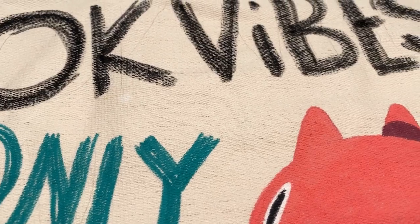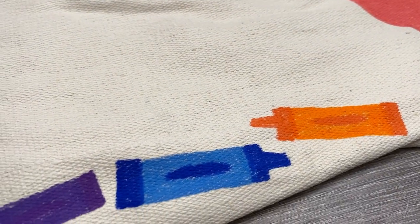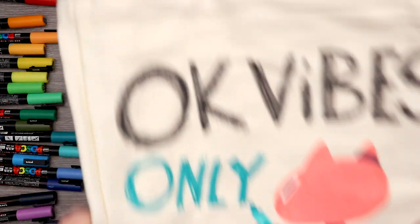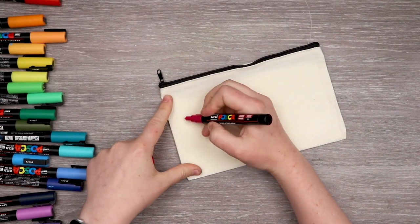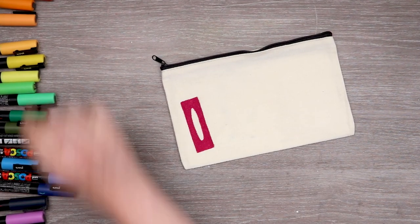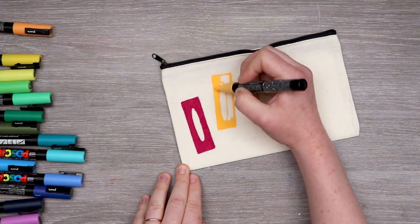So for the smaller bag I wanted to draw more crayons because I just had so much fun creating those two-toned colored crayon situations on the previous tote bag. So I just put down some blocks of color. We have a pink crayon, an orange crayon, a green crayon, and a blue crayon.